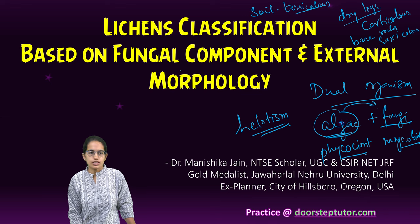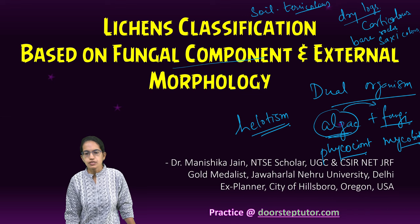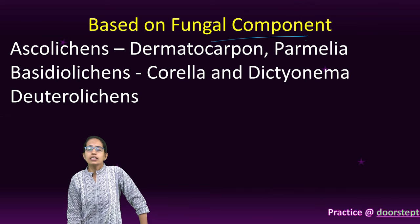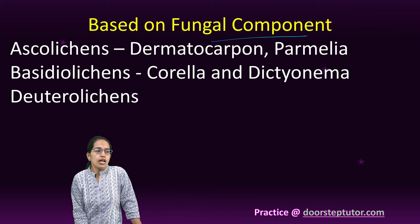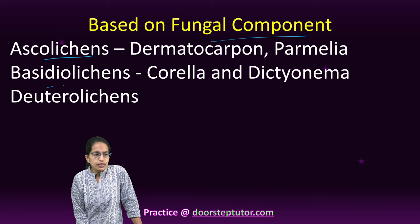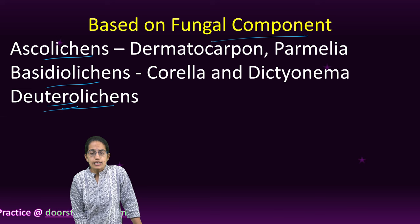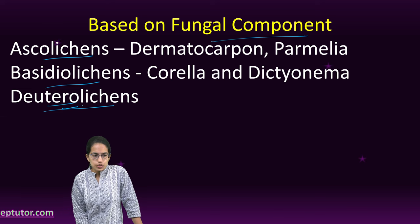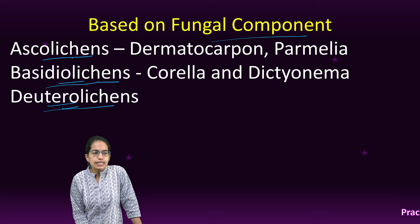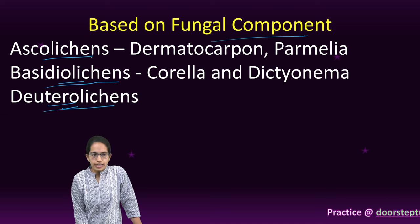Now, coming to classification. Classification is based on two aspects: one is the fungal component, and the other is external morphology. Under fungal components, we have ascolichens, basidiolichens, and deuterolichens. Deuteromycetes is the group to which deuterolichens belong; Basidiomycetes to basidiolichens; and Ascomycetes to ascolichens.